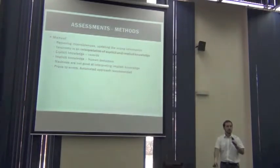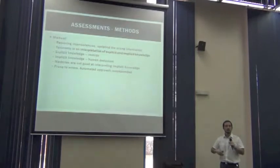Explicit knowledge comes from the records. Implicit knowledge is something we can't have directly, we must infer it.